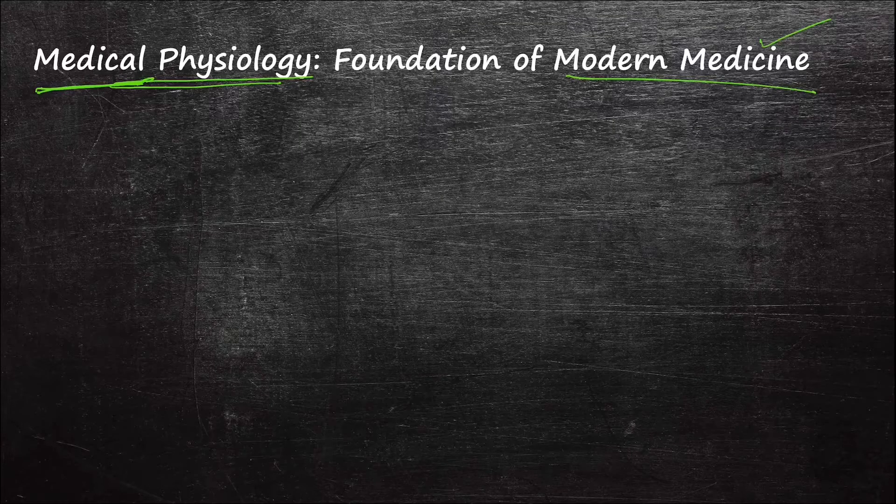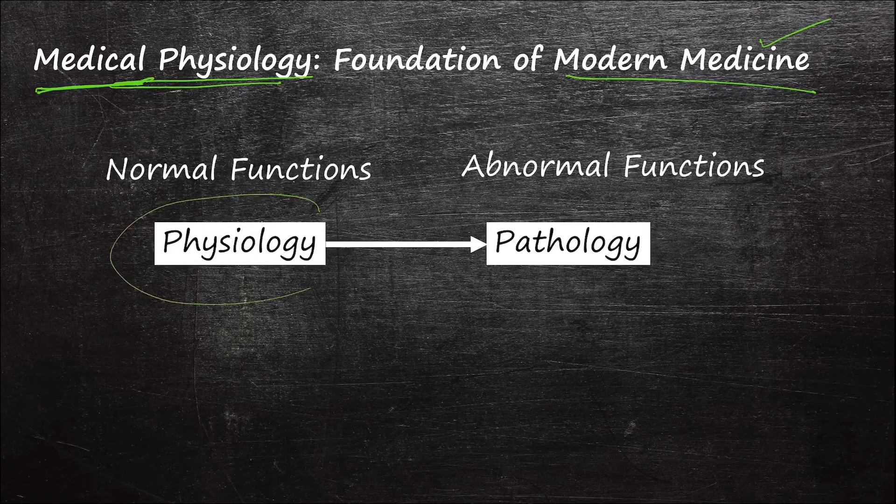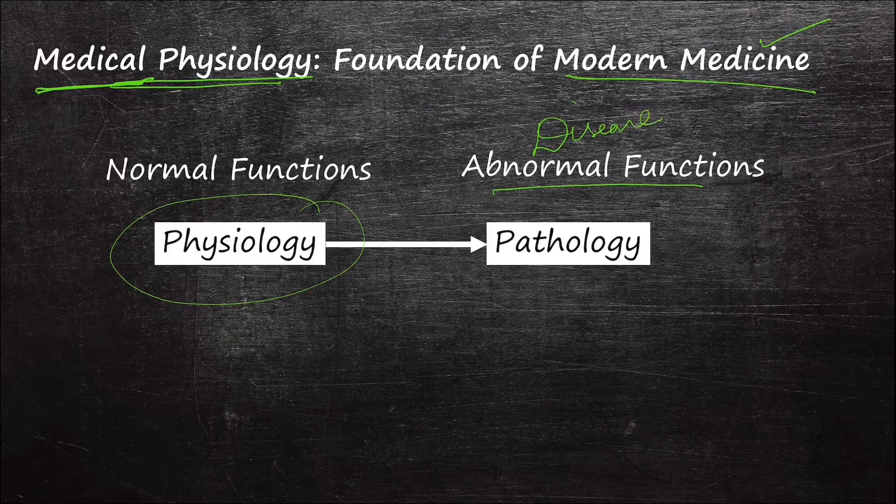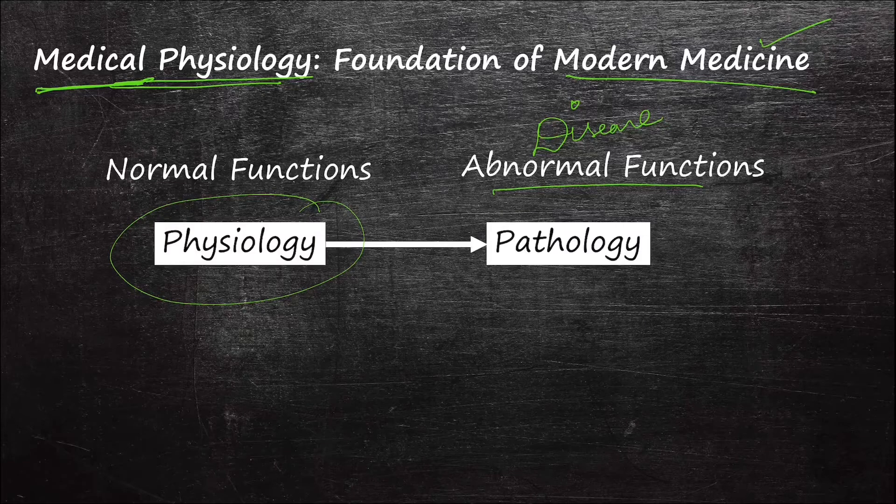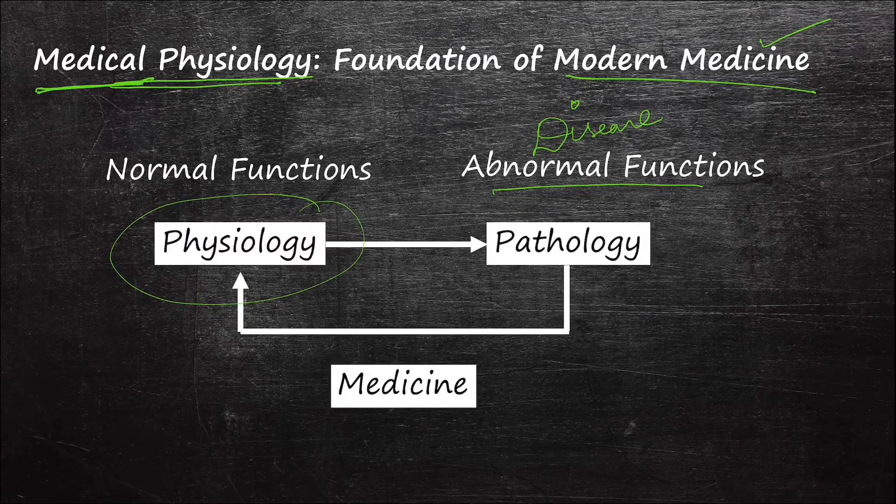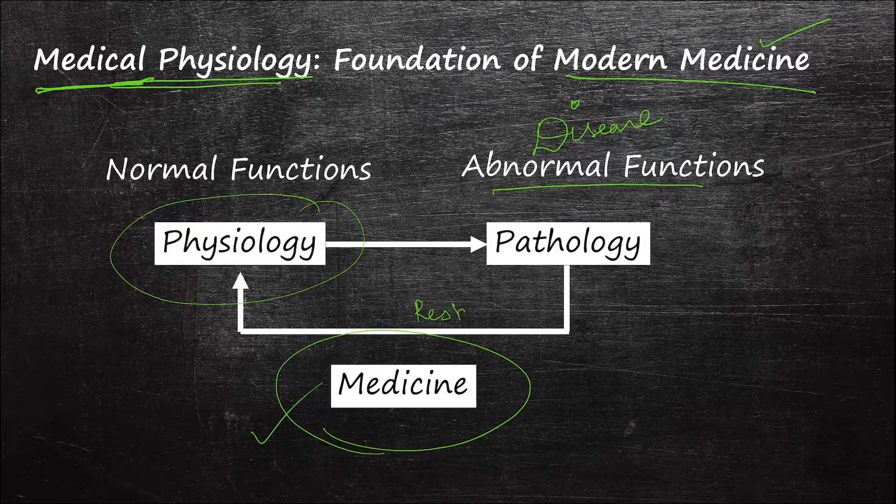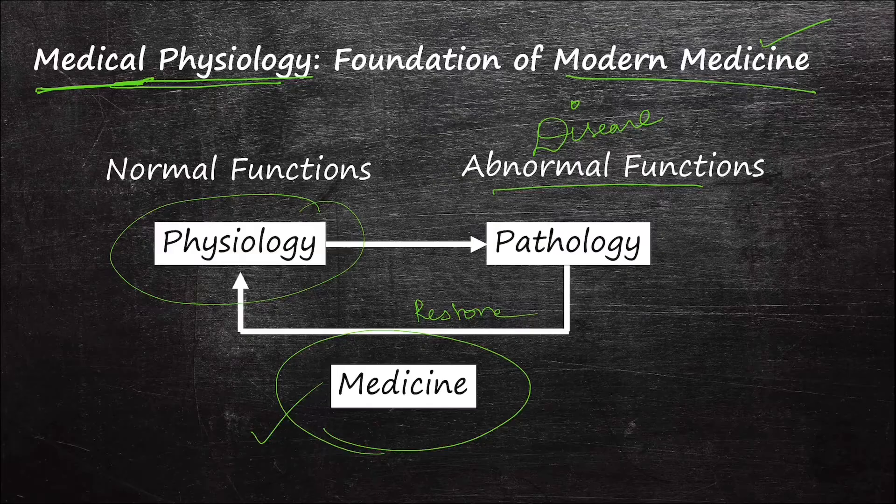When a human body deviates from its normal function, it is called a diseased state, a pathological state. The aim of medicine is to bring back the body from a diseased state back to its normal physiology. That is why the study of medicine begins with the study of its foundation, that is medical physiology.